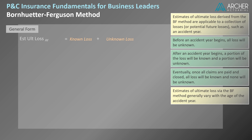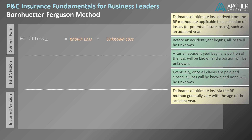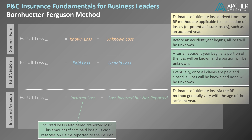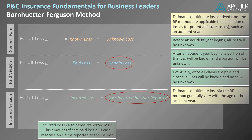The BF method can be adapted to various scenarios. However, the two most popular versions are the paid version and the incurred version. In the paid version, the estimate of ultimate loss equals paid loss plus unpaid loss. In the incurred version, it's equal to incurred loss plus loss that has been incurred but not yet reported. In this context, incurred loss is defined as reported loss, which is the sum of paid loss and case reserves — so incurred loss refers only to losses that are known to the insurer. Notice how the first term in each formula corresponds to the known loss, and the second term corresponds to the unknown loss in the general form.